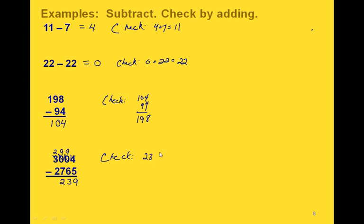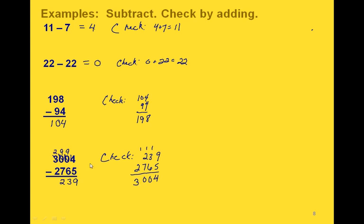If we want to check this, we would take 239 and add the 2,765. So 9 plus 5 is 14, carry the 1. Then 4 plus 6 is 10, carry the 1 again. Then 3 plus 7 is 10, so we have 0 there and carry the 1. And 1 plus 2 gives us 3. So this checks with what we had in our original problem.